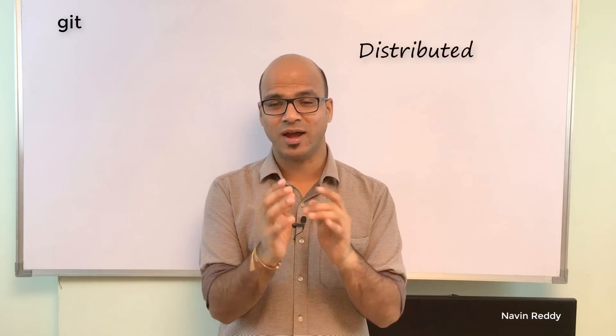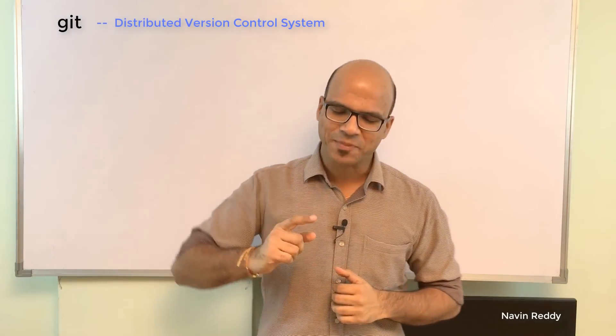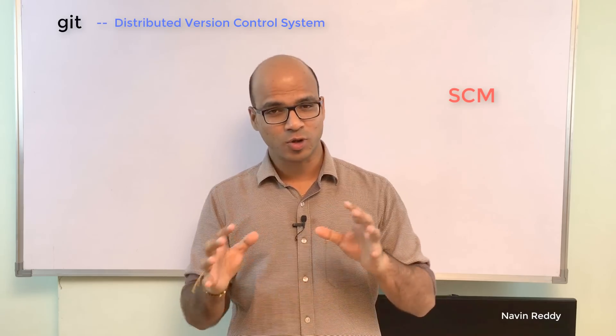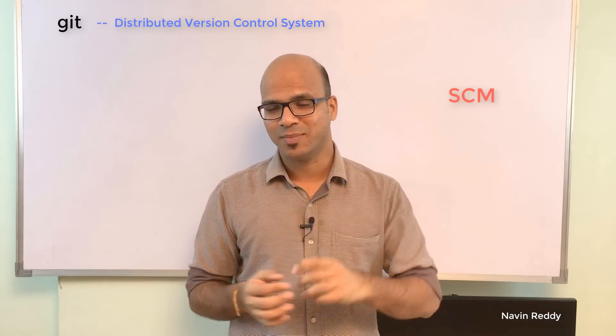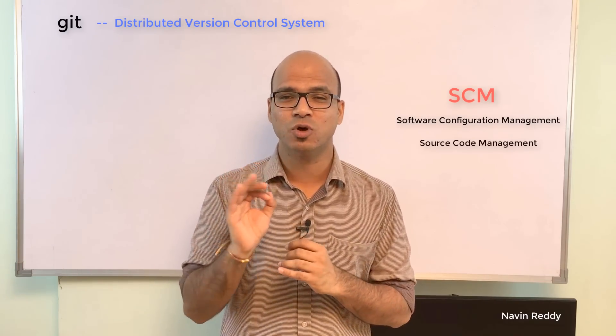Git is actually a distributed version control system — heavy words, right? Let's try to understand those terms. We have a concept called SCM, and it's not just for Git — the concept has been around for a long time. SCM stands for Software Configuration Management, or you can also use another full form: Source Code Management.